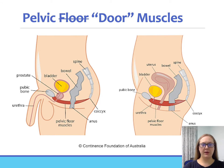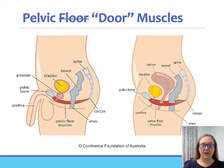Let's talk about pelvic floor muscle anatomy. Sometimes it's easier to think of this not as a floor but more as a door. The pelvic floor muscles form a sling from the pubic bone to the tailbone, and there are openings through them — the urethra and anus for bowel and bladder elimination, and in female anatomy, an opening for the vagina for reproductive functions.